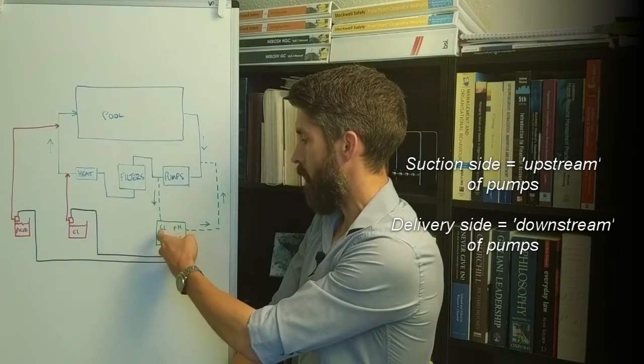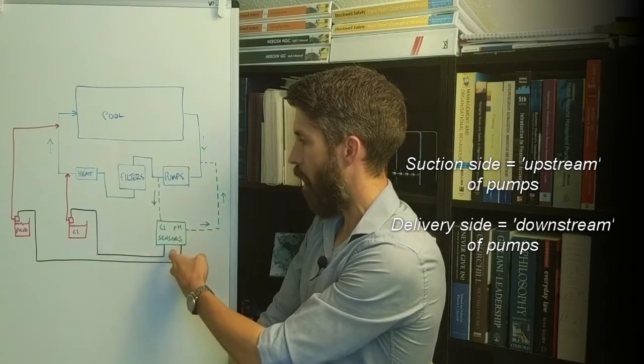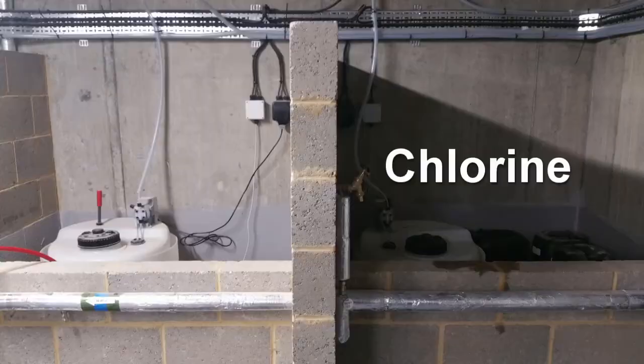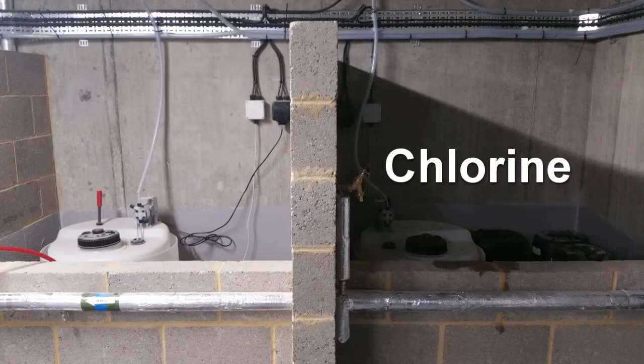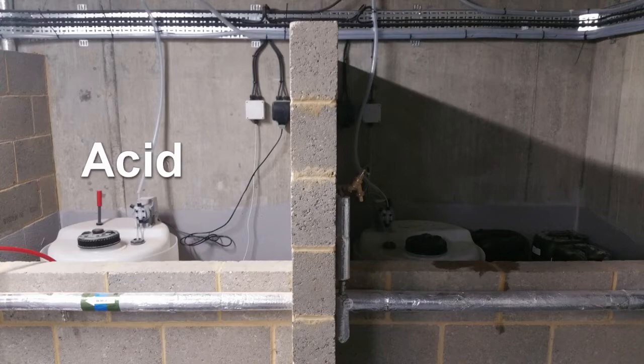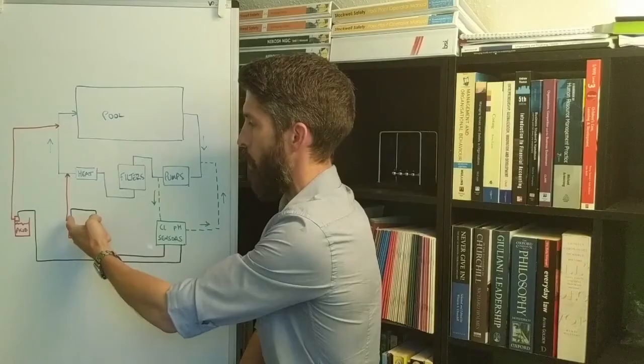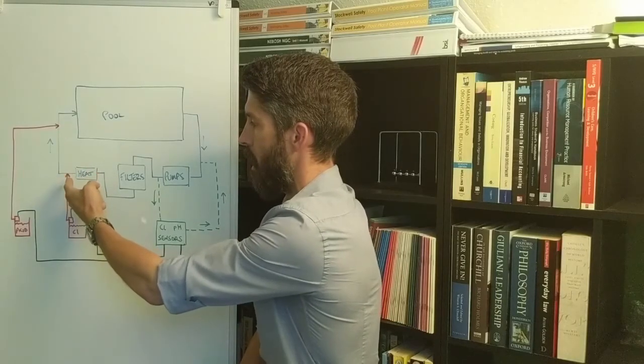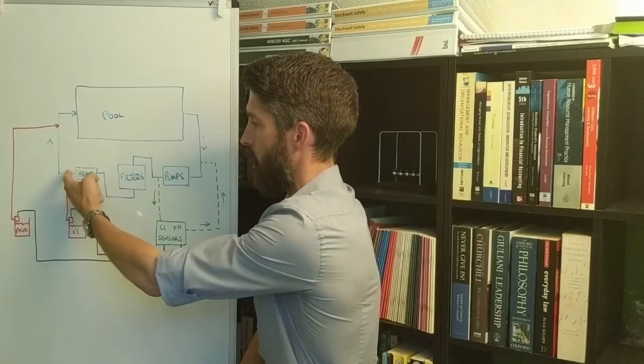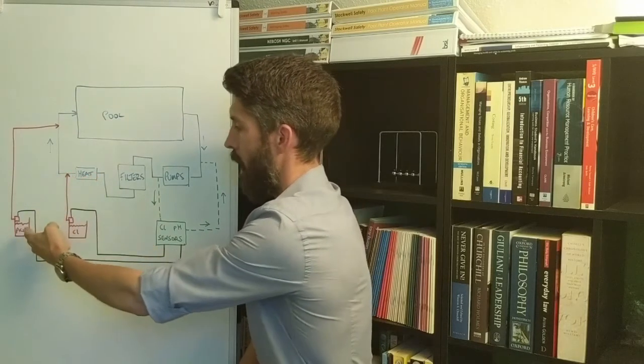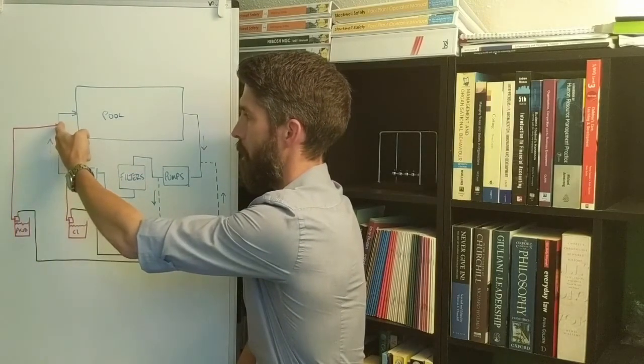These chlorine and pH sensors are linked to the chlorine and acid dosing sets. So chlorine is being dosed in there just after the heat exchanger, acid is being dosed a bit further on.